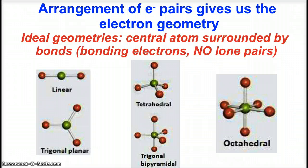If we have a central atom surrounded by all bonds with no lone pairs: a central atom surrounded by two atoms is linear with 180 degrees separation; three atoms around it is trigonal planar with 120 degree angles; and an atom surrounded by four different atoms is tetrahedral with 109.5 degree bond angles.